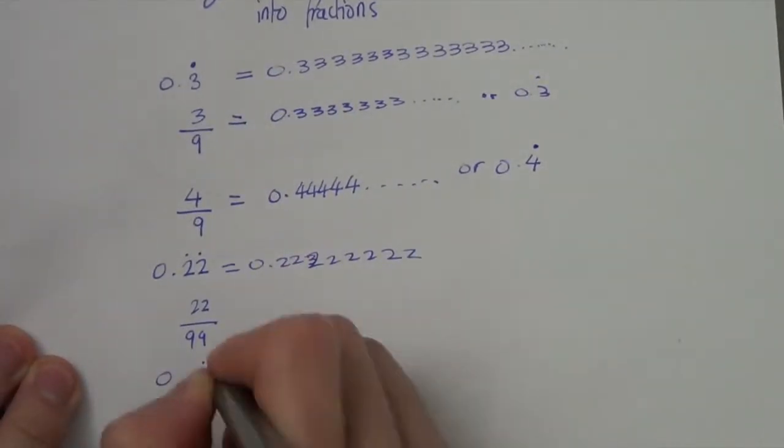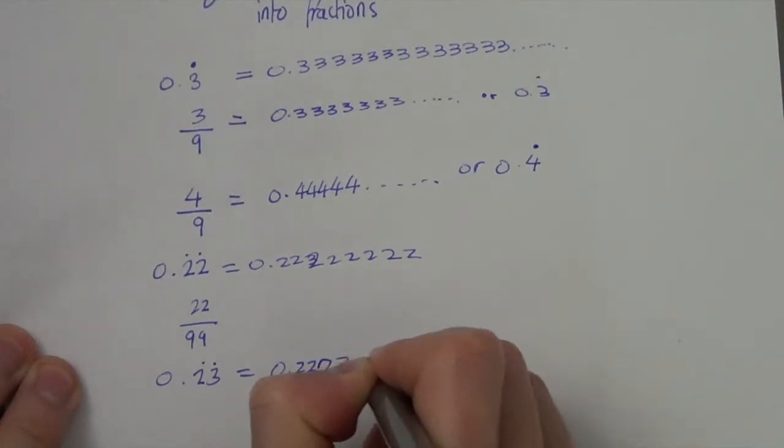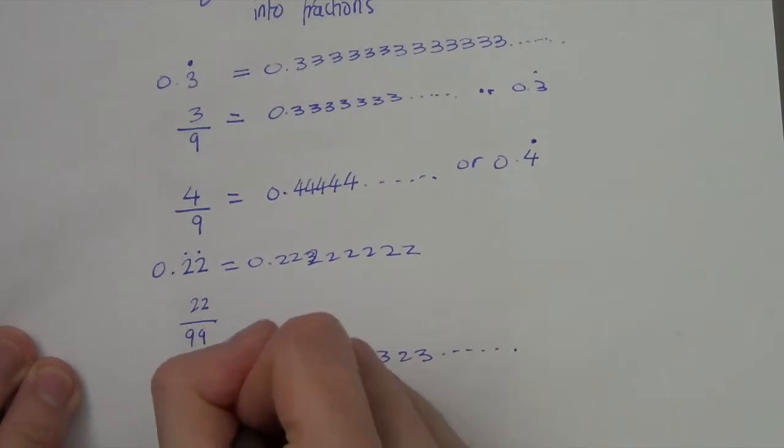Same thing. 0.23 recurring, and so on. That is equal to 23 over 99.